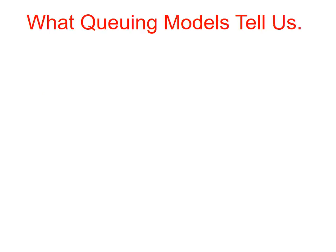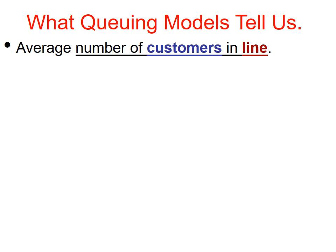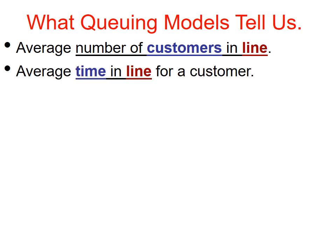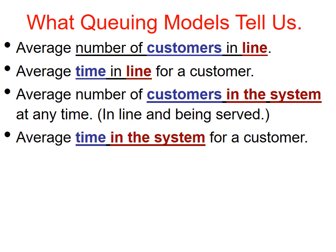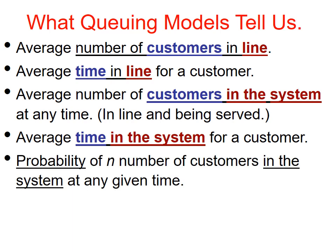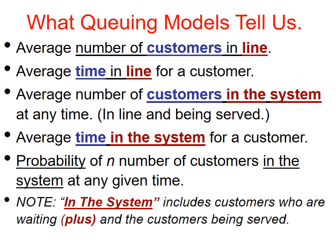What queuing models tell us: average number of customers in line; average time in line for a customer; average number of customers in the system at any time (in line and being served); average time in the system for a customer; probability of n number of customers in the system at any given time. Note: the system includes customers who are waiting plus the customers being served.